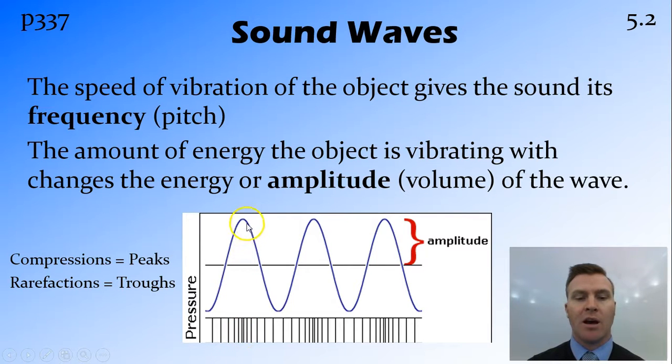At the compression there'd be a high amount of air pressure, and at the rarefaction there'd be a low amount of air pressure. That's how we get from our compressions and rarefactions into this wave. We have our compressions at the peaks and rarefactions at the troughs.